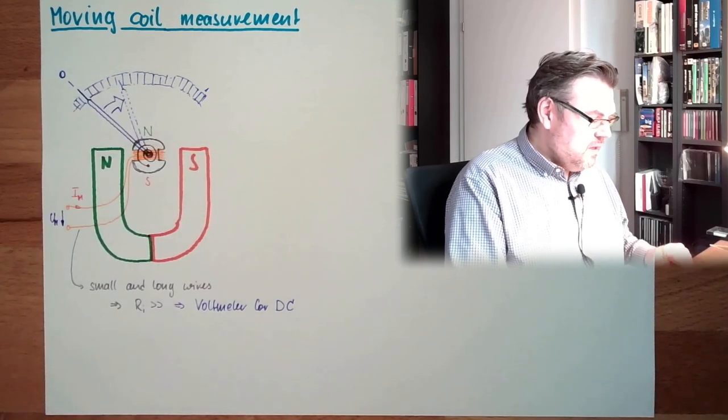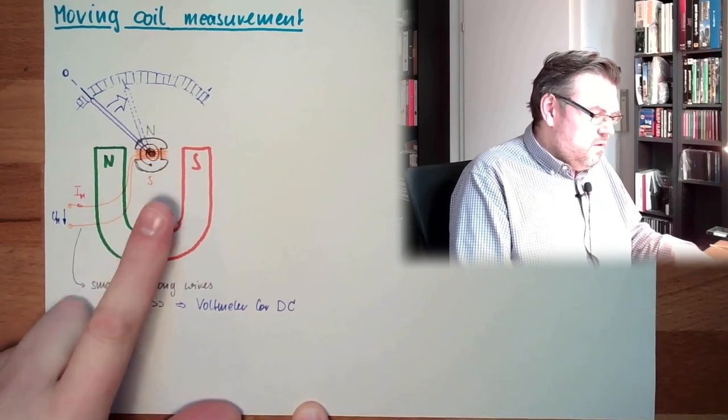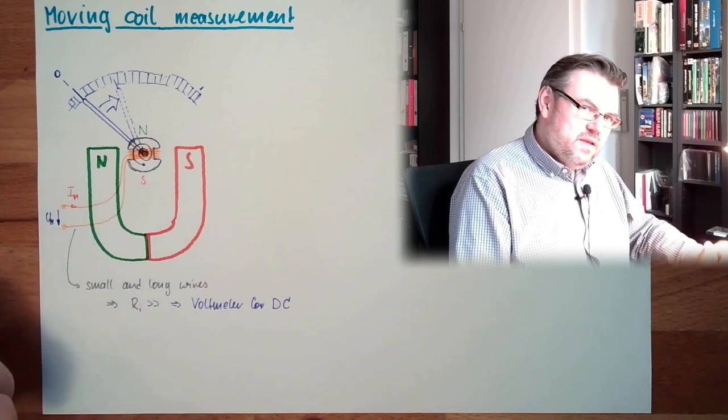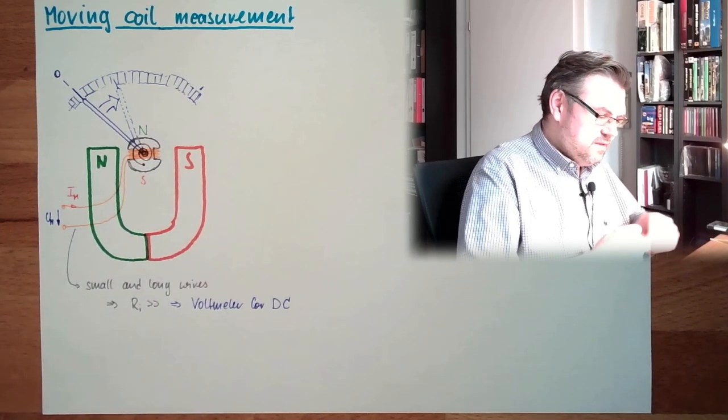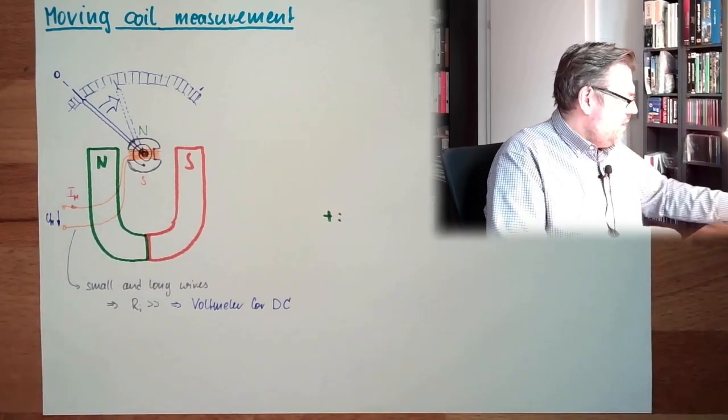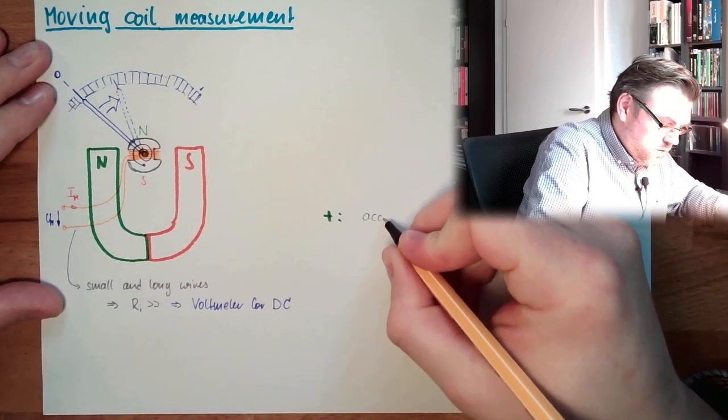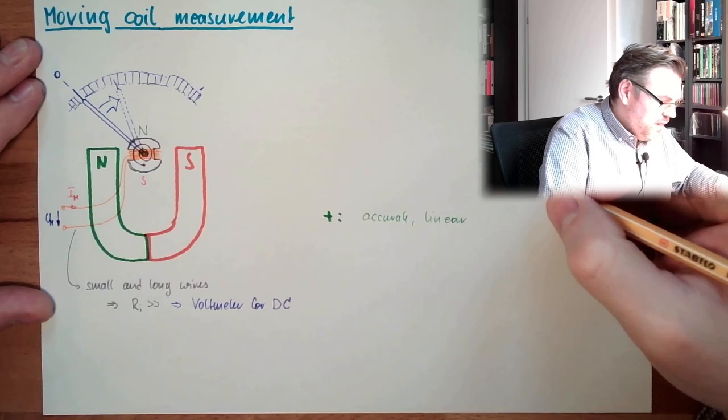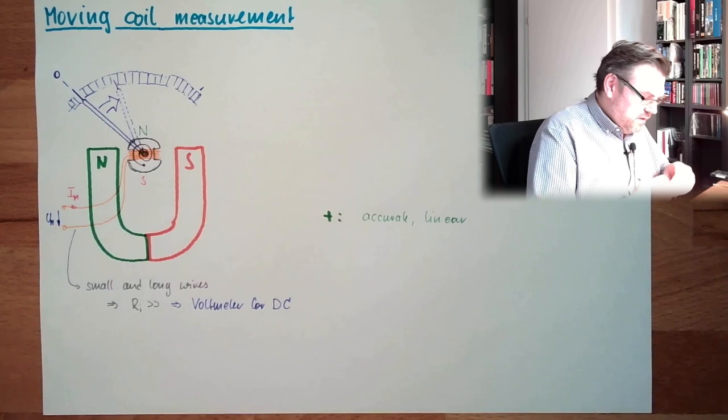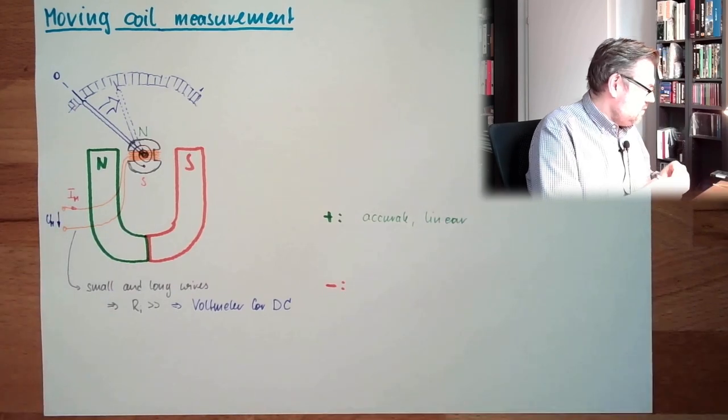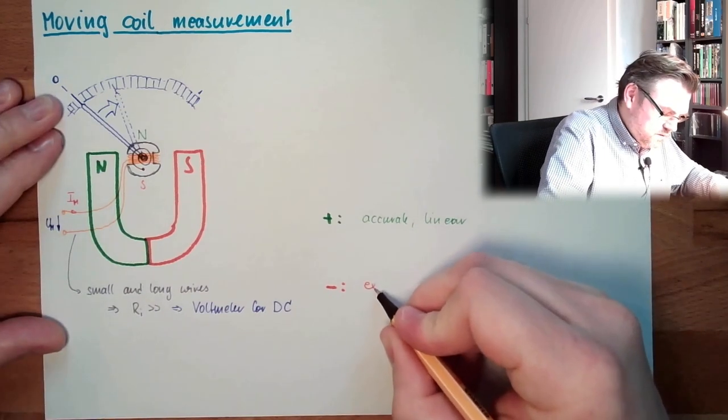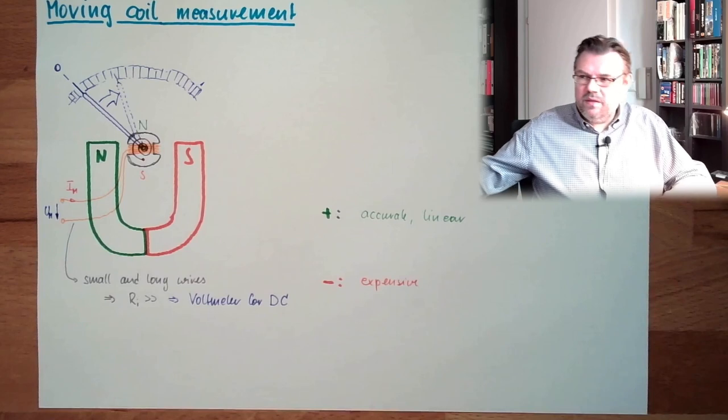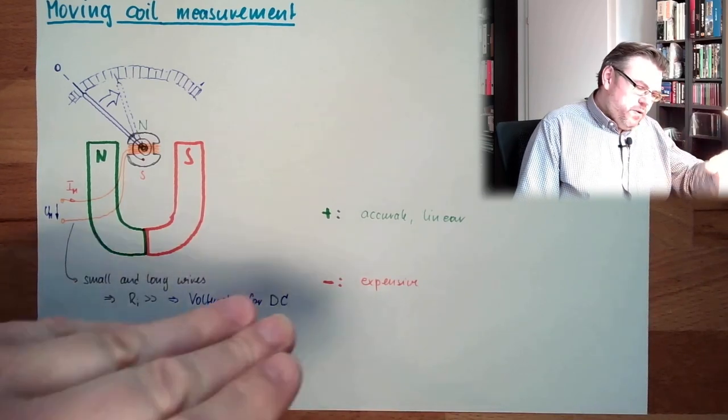But the core is always the same. If you look at that, it looks rather simple. However, because of these small wires and so on, it's rather expensive. The benefits of this thing are it's really accurate. It's accurate, it's linear, it's working pretty well.